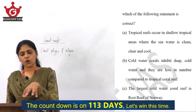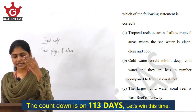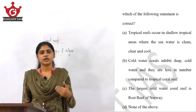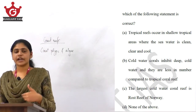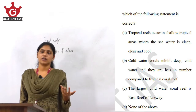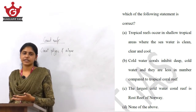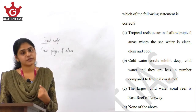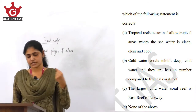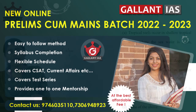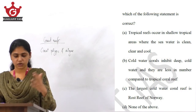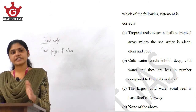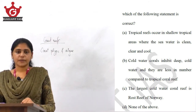Cold water corals inhabit deep cold waters. According to UNEP, there are more cold water coral reefs compared to tropical coral reefs. Rost reef, situated in Norway, is the largest cold water coral reef in the world. The Great Barrier Reef off the coast of Queensland, Australia, is the world's largest tropical coral reef.